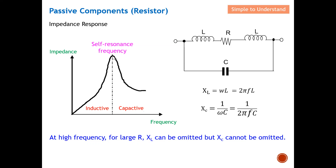At high frequency, specifically above the self-resonant frequency, the behavior changes completely — the resistor becomes dominated by a capacitive effect. As frequency increases, the inductive reactance XL increases, so current becomes less willing to flow through that path. At the same time XC becomes small, so current prefers to flow through the parasitic capacitor path. Therefore at high frequency, for a large R, we can omit XL but we cannot omit the capacitive effect. At low frequency the resistor is mainly inductive; at high frequency it is mainly dominated by the capacitive effect.